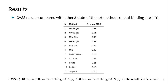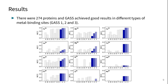For most metal ions, GAS presents a good recovery rate, even considering the top 10. There were 274 proteins and GAS achieved good results in different types of metal binding sites.